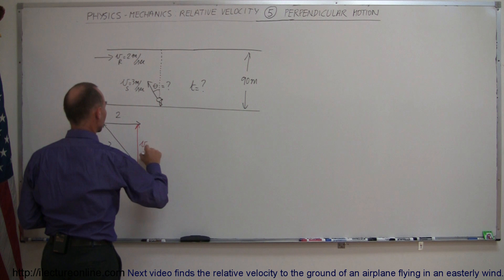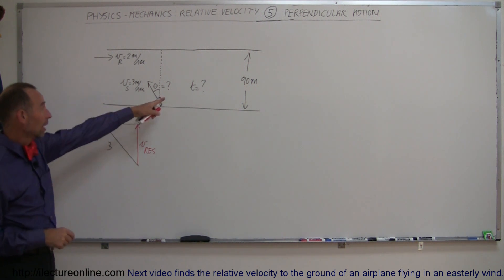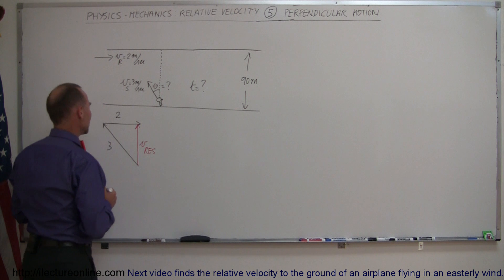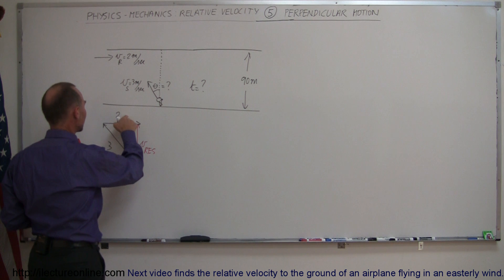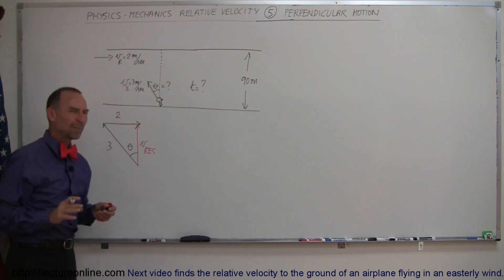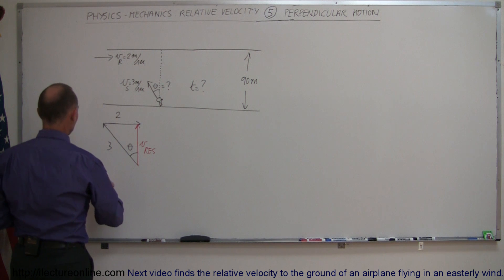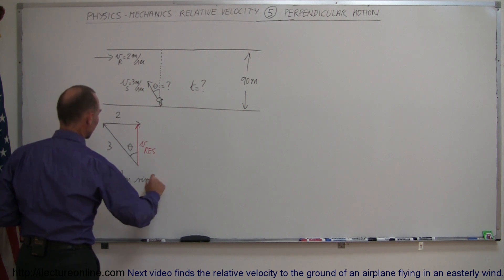So that would be V resultant, and we'll have to figure out what that is as well in order to find out how long it takes him to get across the river. So what is that equal to? Well, let's see here. First of all, let's find the angle. So trying to find the angle theta, we have the opposite side, we have the hypotenuse. So that means we're going to use the sine function, and we can say that the opposite side is equal to the hypotenuse times the sine of the angle theta.